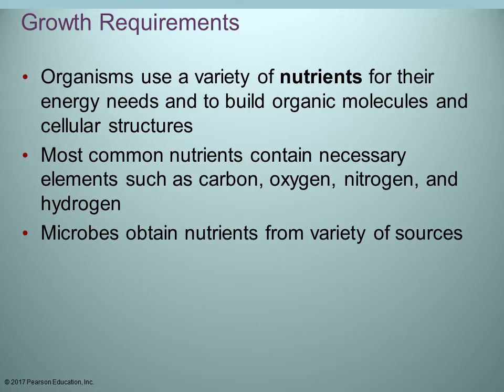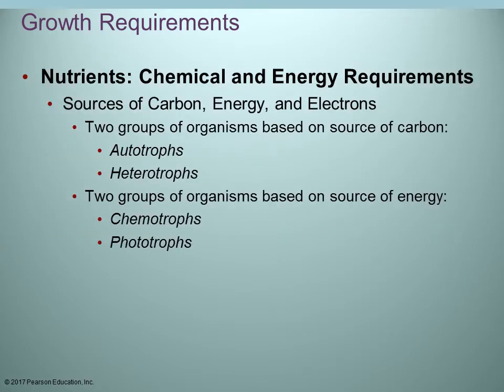Where are the microorganisms going to get their nutrients from? They're going to get them from a variety of different sources. We can classify organisms into two different groups based on their carbon source, and also classify organisms based on their energy source. The groups based on carbon source are known as autotrophs versus heterotrophs, and based on energy source are chemotrophs or phototrophs.